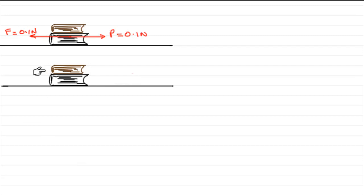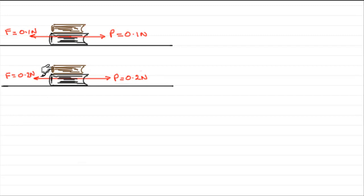Now suppose you push a little harder on the books, let's say with a force of 0.2 newtons, and yet the books still don't want to move. What's actually happening? Well, we've got our frictional force acting in the opposite direction, but this time that frictional force has increased. It's now 0.2 newtons — opposing motion in the opposite direction to the way the books would want to move.